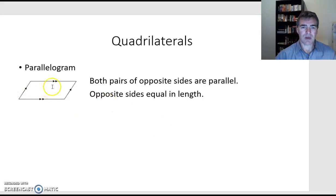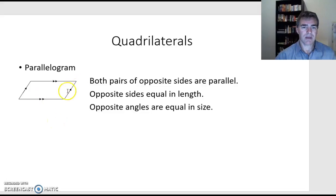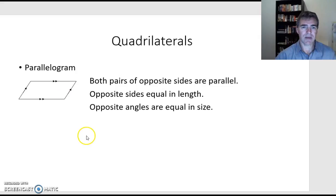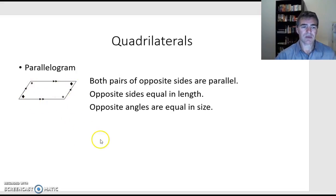In a parallelogram, opposite angles are also equal. So this angle here is equal to that angle opposite, and this angle here is equal to that angle opposite. So those two are the same and those two are the same.